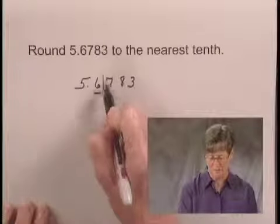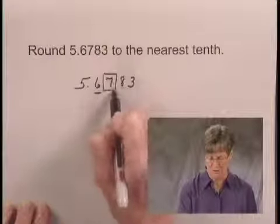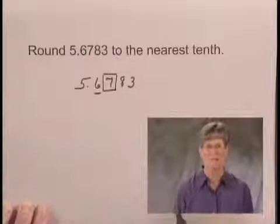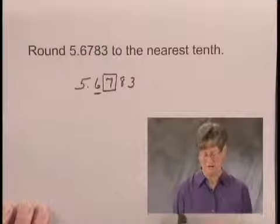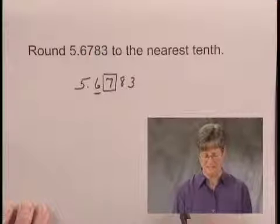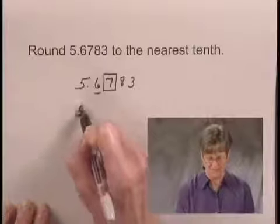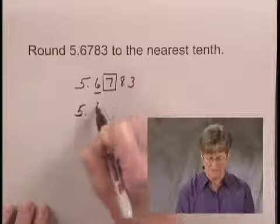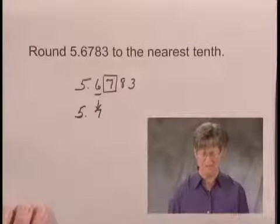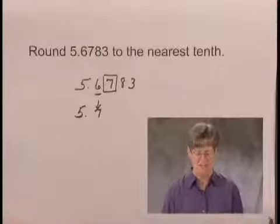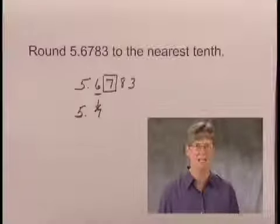We'll look at the next digit to the right, which is 7. Since 7 is 5 or higher, this tells us that we round up. So we would round this as 5 point and rounding 6 up, 7. So 5.7 is this number rounded to the nearest tenth.